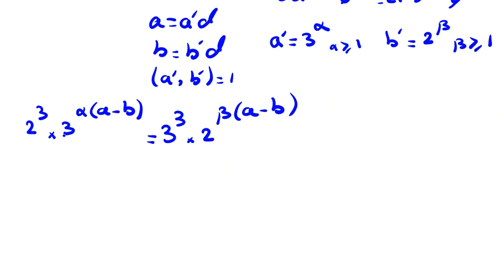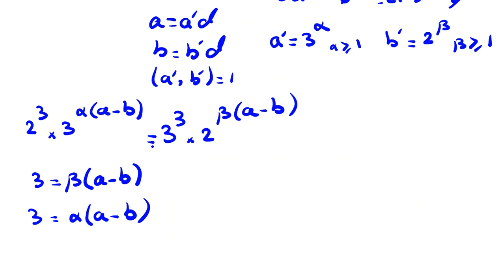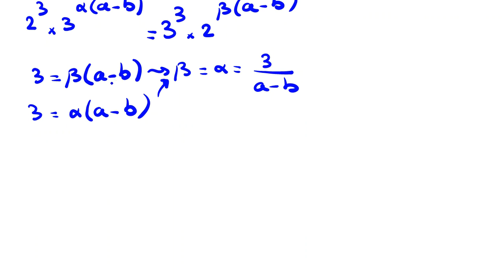Equating powers of each prime on both sides: for the prime 3, we get α·(a−b) equals 3; for the prime 2, we get β·(a−b) equals 3. Therefore α equals β equals 3/(a−b). Since α and β must be positive integers, and their product with (a−b) is 3, the possible cases are α equals β equals 1 with a−b equals 3, or α equals β equals 3 with a−b equals 1.